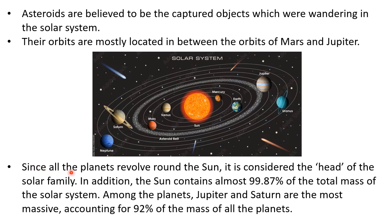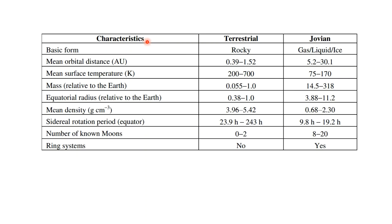Since all the planets revolve around the Sun, our Sun is considered the head of the solar family. In addition, the Sun contains almost 99.87% of all the mass of our solar system. Among the planets, Jupiter and Saturn are the most massive, accounting for 92% of the mass of all other planets. Just for example, we can fit approximately 1,300 Earths in Jupiter — you can imagine how large Jupiter is.